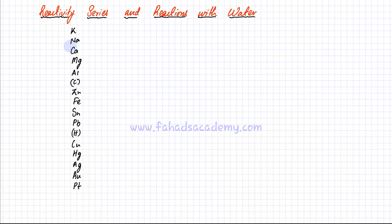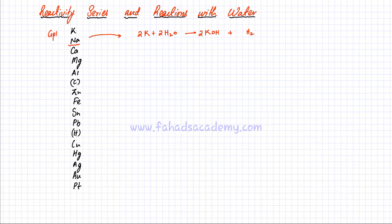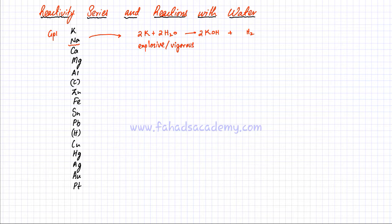Starting with group 1 metals — these are extremely reactive. Potassium, for example, reacts with water to produce potassium hydroxide, which is a very strong alkali, and gives off hydrogen gas. We can balance this entire equation. This reaction is very explosive and vigorous.